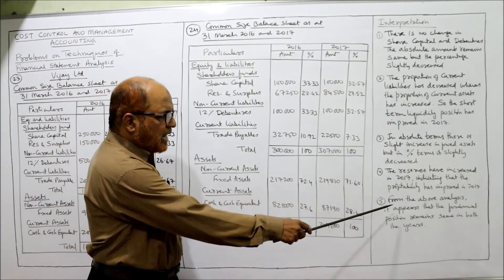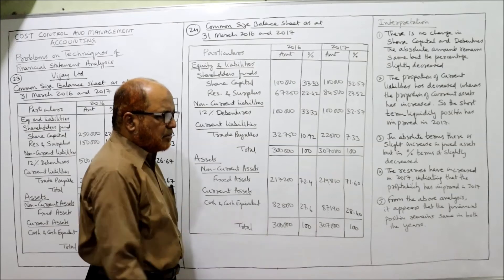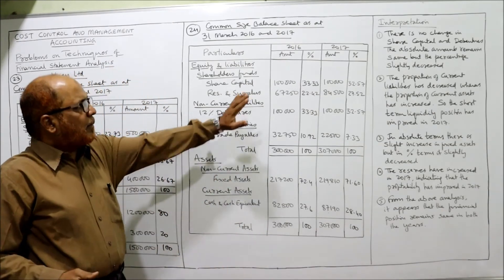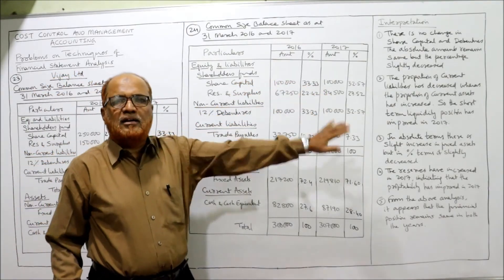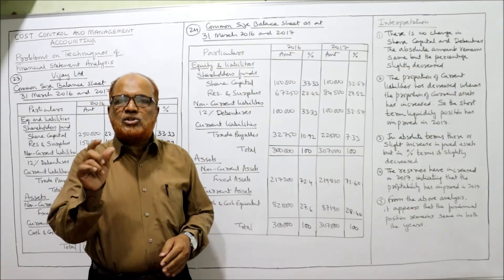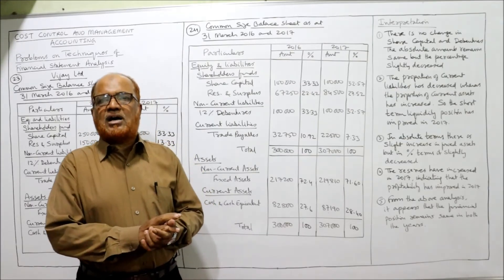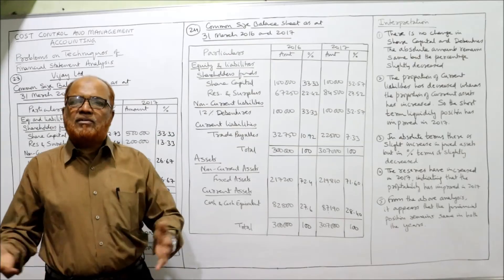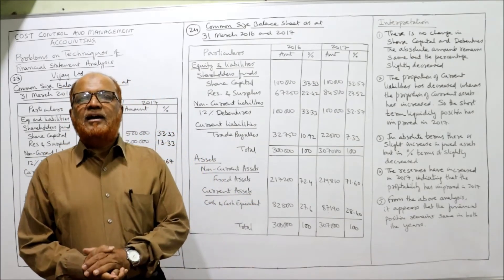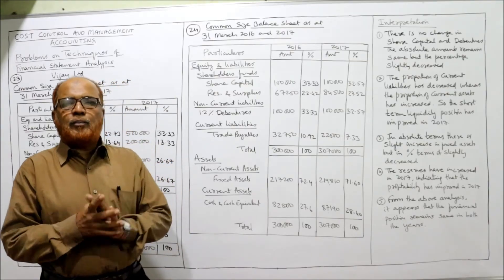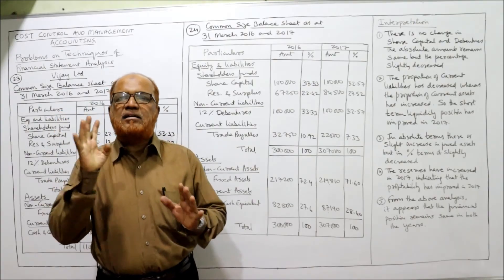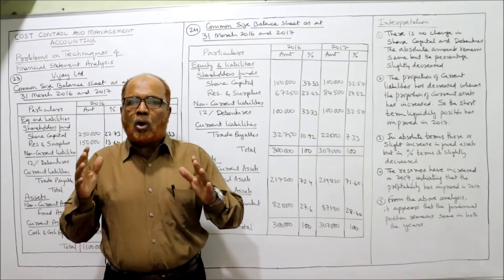Lastly, from the above analysis it appears that the financial position remains the same in both the years. Final conclusion: if you compare the financial position of last year and current year, there is no significant change — only small minor changes. In both years the financial position is the same. In this way you can give the interpretation.